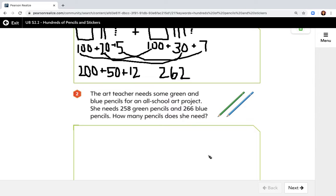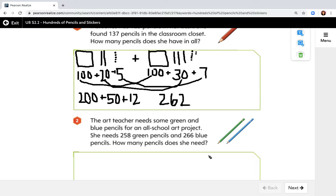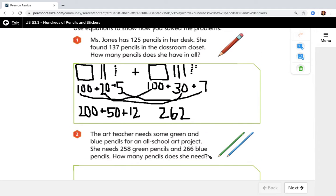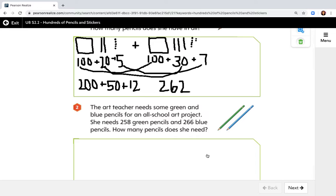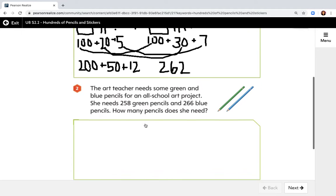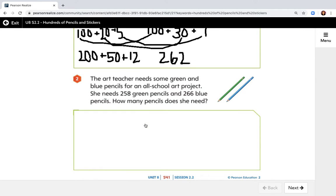All right, the art teacher. Let's see how many pencils the art teacher has. Do you think the art teacher is going to have more or less pencils than Miss Jones? I'm seeing some big numbers here. The art teacher needs some green and blue pencils for an all-school art project. She needs 258 green pencils and 266 blue pencils. How many pencils does she need?